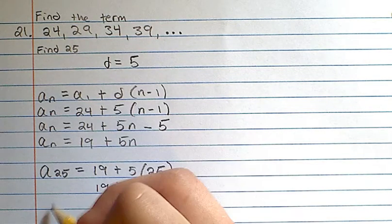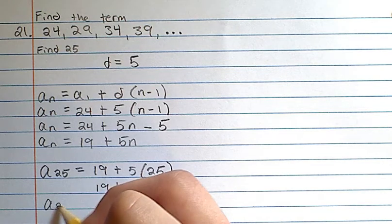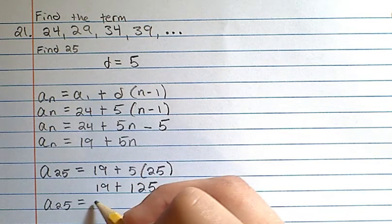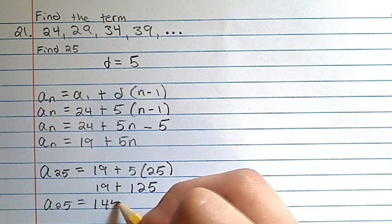When we add these two together, we get a25 is equal to 144.